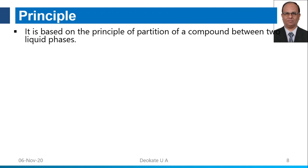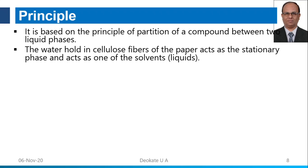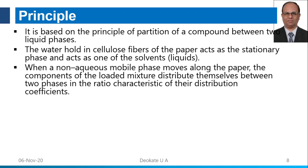The principle of paper chromatography is based on the partition of compounds between two liquid phases. The water held in cellulose fibers acts as the stationary phase. When a non-aqueous mobile phase moves along the paper, components of the mixture distribute themselves between the two phases in a ratio characteristic of their distribution coefficient.